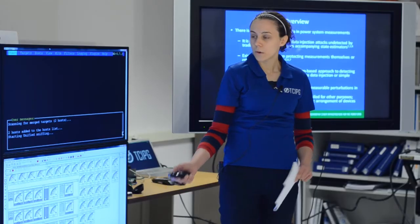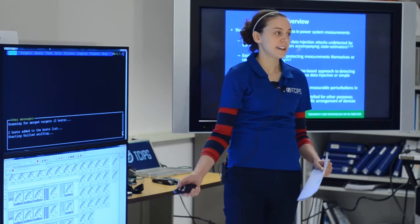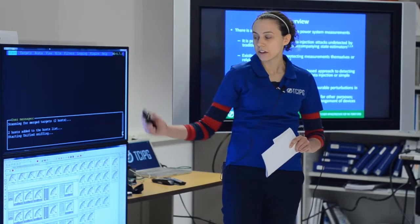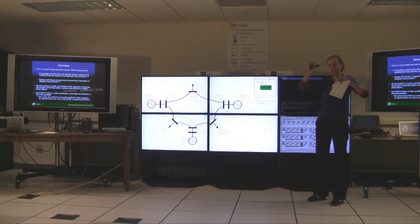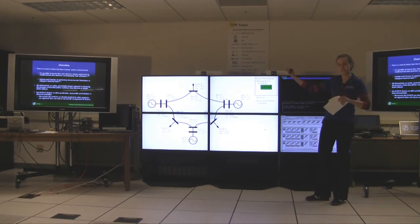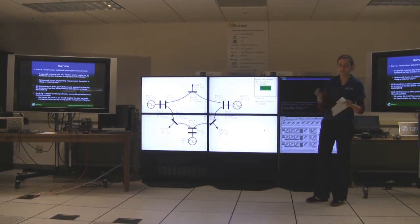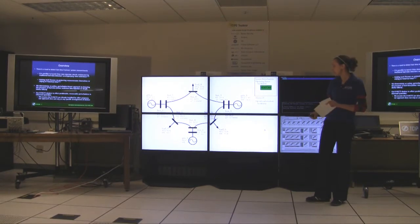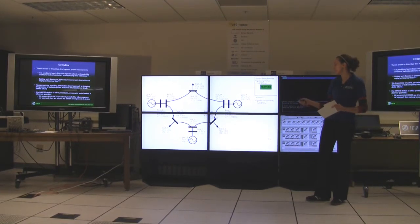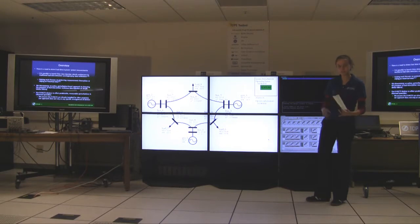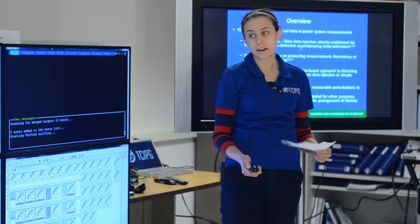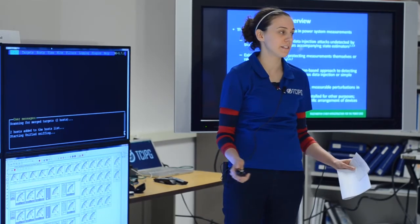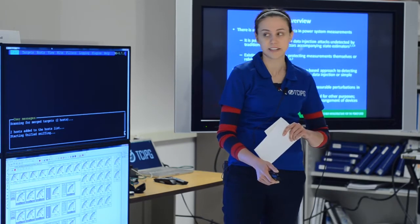Specifically, what we do is use DFACS devices placed on lines in the grid. These devices are modules that get clamped along the transmission lines and can affect the complex impedance on that line. So we use these to create predictable measurable perturbations in the grid, and we assume that the DFACS are already installed for other purposes. Our approach doesn't rely on any specific arrangement of these DFACS equipped lines.